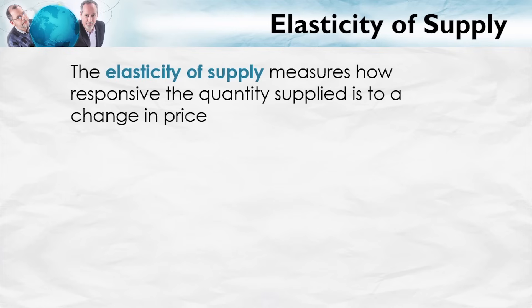The elasticity of supply measures how responsive the quantity supplied is to a change in the price. It's almost the same as the elasticity of demand, except instead of measuring the responsiveness of the quantity demanded, it measures the responsiveness of the quantity supplied to a change in price.